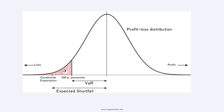That's where Expected Shortfall (ES), also known as Conditional Value at Risk (CVaR), comes into picture. It measures the average loss in the worst-case scenarios that exceed the VaR threshold. It is a more robust and coherent risk measure than VaR because it captures tail risk, and regulators and risk managers increasingly prefer it for evaluating potential extreme losses in portfolios.